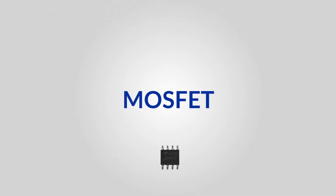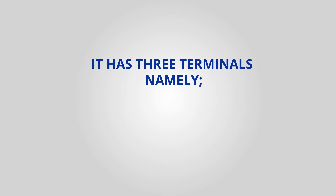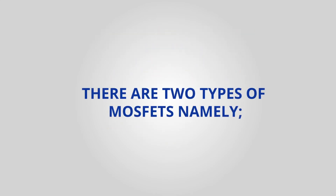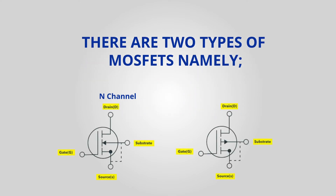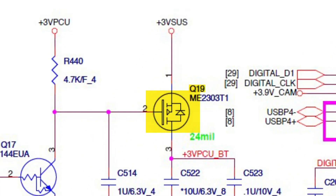The next on the list is the MOSFET. It is a type of transistor and works as a digital switch. It has three terminals: gate, source, and drain. There are two types of MOSFETs — N-channel and P-channel — but more on that later. It is represented by the letter Q on motherboards.